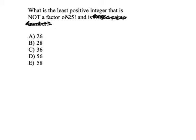What we want to know is the smallest positive integer that is not a factor of 25 factorial. What does 25 factorial mean? It means we're going to multiply 25 by every number going down to 1, or every integer. So 25 times 24 times 23 times 22, all the way down to 1.